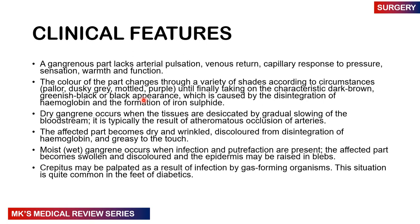There are three main types of gangrene: dry gangrene, wet gangrene, and gas gangrene. Dry gangrene occurs where the tissues are drying up and desiccating because there's a gradual cutoff of blood flow. This happens when arteries are occluded, for example by atheromas blocking end arteries with no collateral supply. The affected part will appear dry, wrinkled, discolored from disintegration of hemoglobin and formation of iron sulfide, and will be greasy to touch.